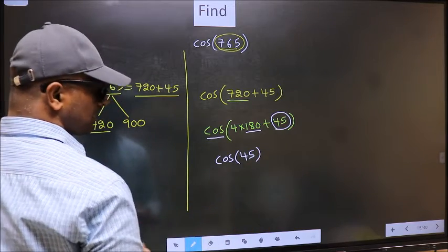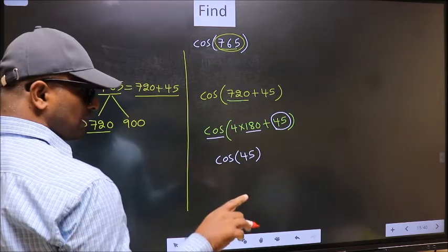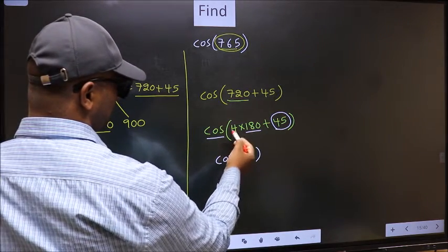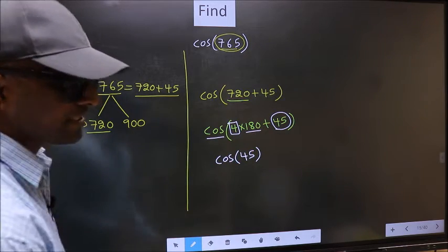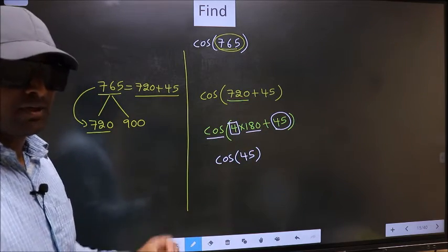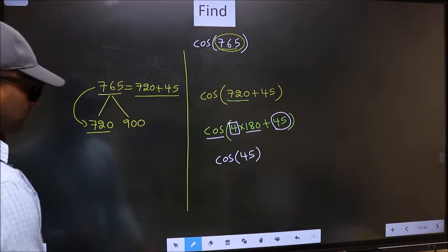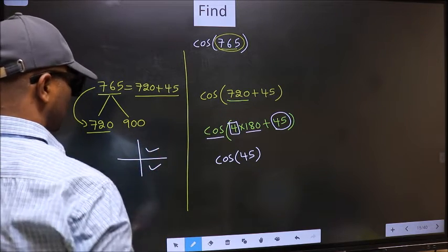Now the question is, will we get here plus or minus? To answer that, we should look at the number before 180. That is 4, and 4 is even. And all the even multiples of 180 lie either in the first or in the fourth quadrant.